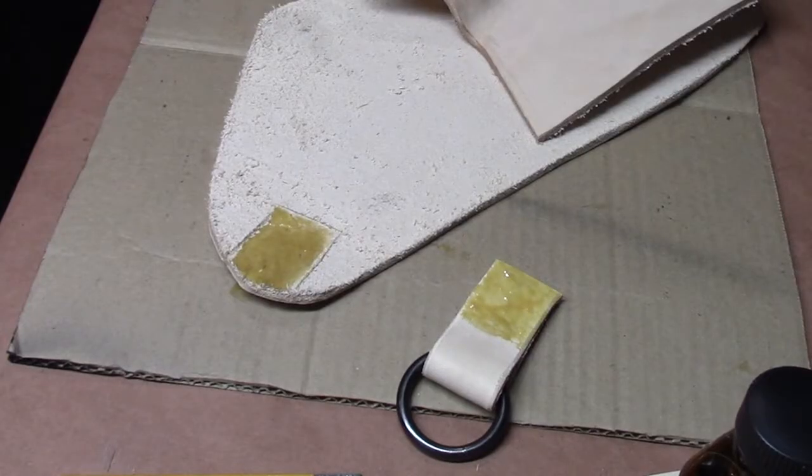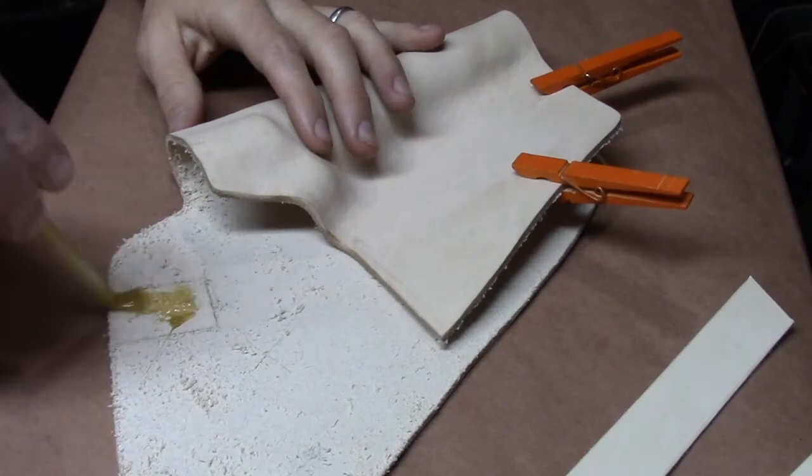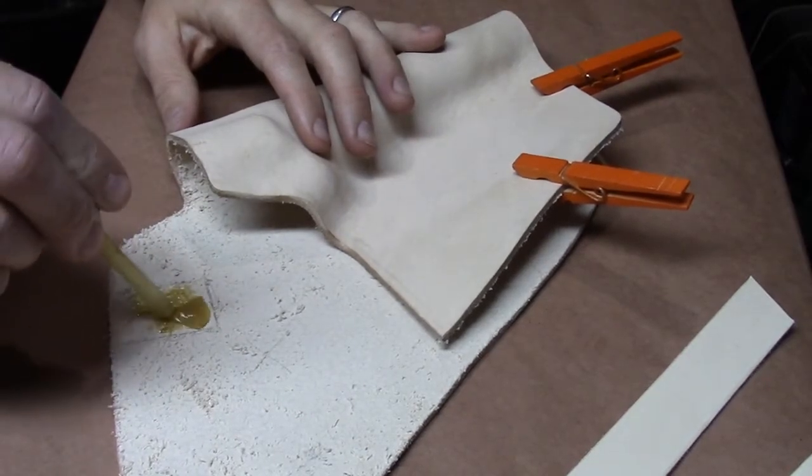This circular ring is going to go in this location here on a tab. Go ahead and contact cement that into place. The retention strap for the holster is going to go in this location. We'll do the same.